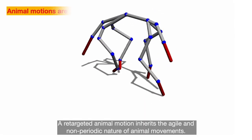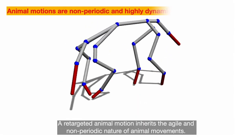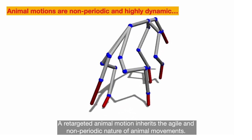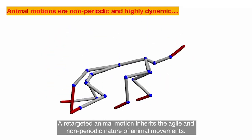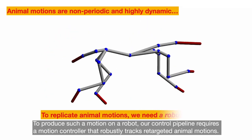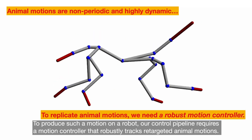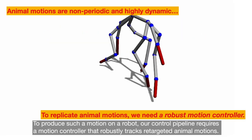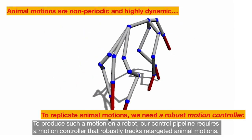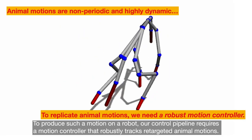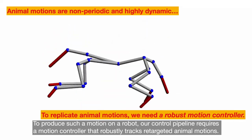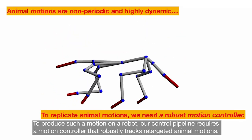A retargeted animal motion inherits the agile and non-periodic nature of animal movements. To produce such a motion on a robot, our control pipeline requires a motion controller that robustly tracks the targeted animal motions.